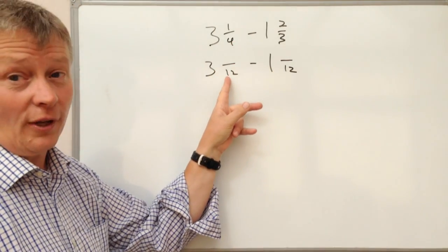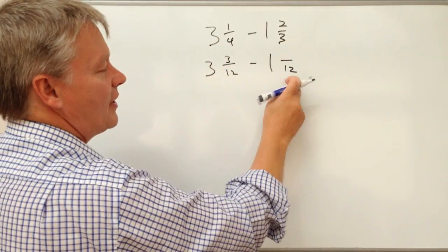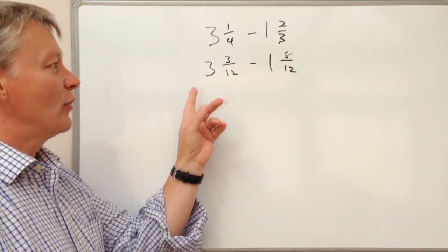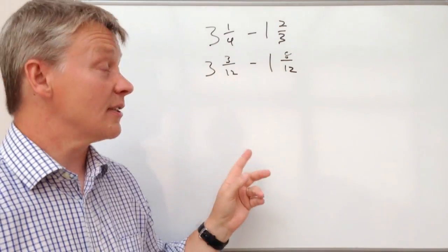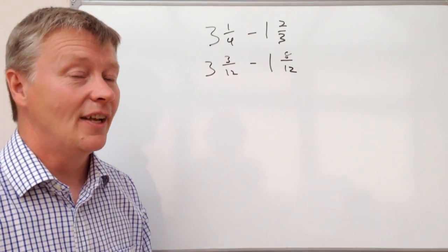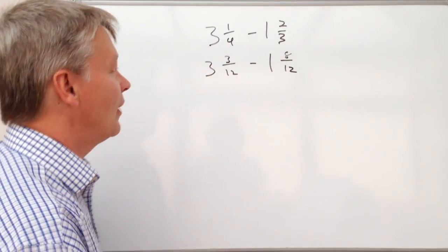4 times 3 is 12, so therefore 3 times 1 is 3. 3 times 4 is 12, so 4 times 2 is 8. So I can take away the numbers, but 3/12 take away 8/12. I can't do that. So that's really important that you see that when you do this sort of exam paper.